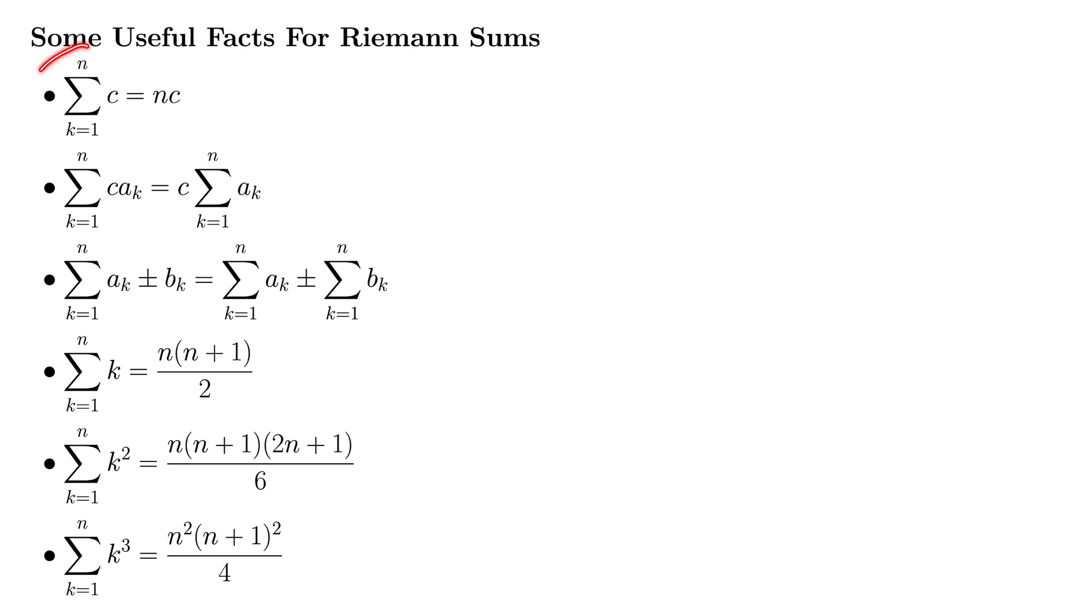The first one says that the sum, as k goes from 1 to n of c, which is just a constant, is simply n times that constant. That kind of makes sense.